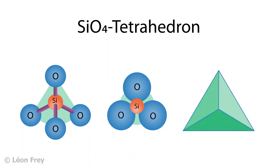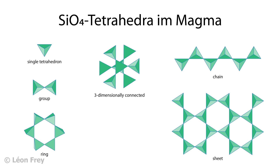The SiO4 anion forms tetrahedrons, with a silicon atom at the center of the tetrahedron and oxygen atoms at each corner. Inside the magma, the silicon tetrahedrons are connected, forming simple compounds, rings, chains, or three-dimensional structures.